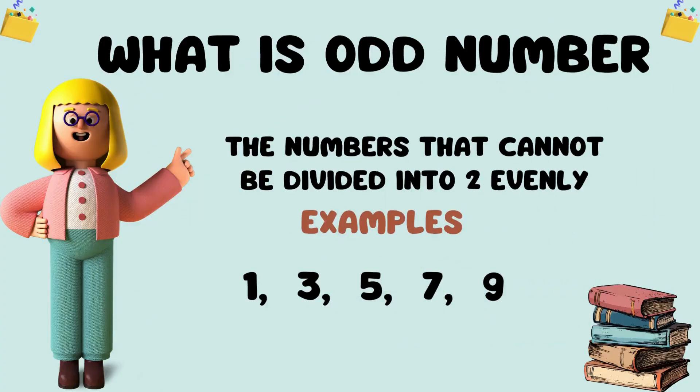What is an odd number? The numbers that cannot be divided into two evenly are called odd numbers. You can see the examples: 1, 3, 5, 7, 9.